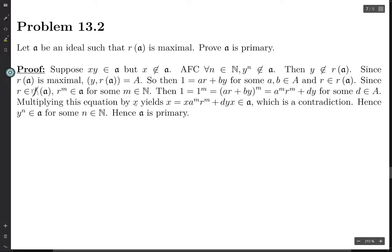And so now we multiply this equation by X and we get that X, because that's 1 times X, is equal to X times A to the M R to the M plus DYX. Now this A to the M, no, this R to the M, R to the M is in the ideal A, so this entire term is in A.